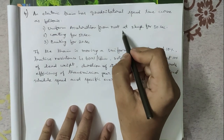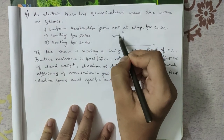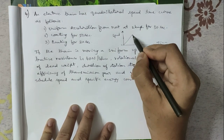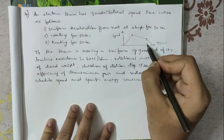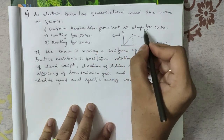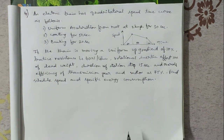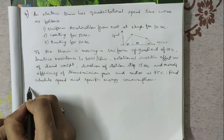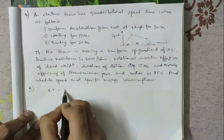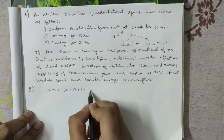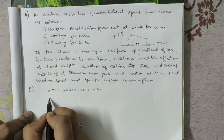First, let us draw the quadrilateral speed-time curve. Speed is on the vertical axis and time on the horizontal axis. The speed rises constantly during acceleration, then there is a coasting period, followed by a braking period. The acceleration period is 30 seconds, coasting is 50 seconds, and braking is 20 seconds. So the actual running time is 30 + 50 + 20 = 100 seconds.